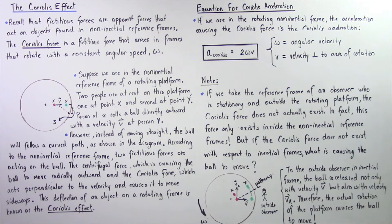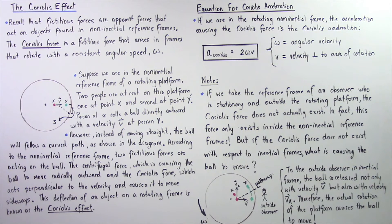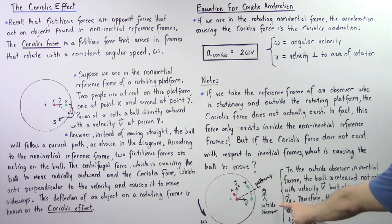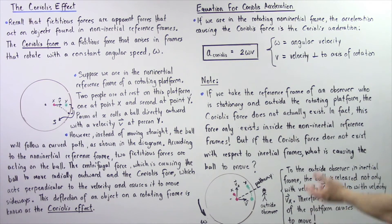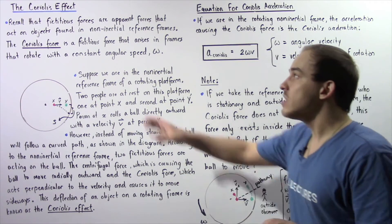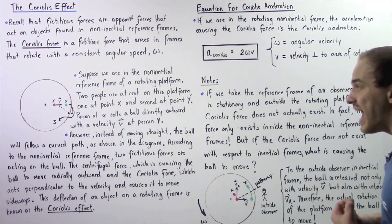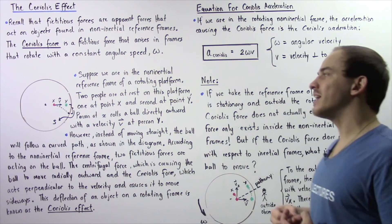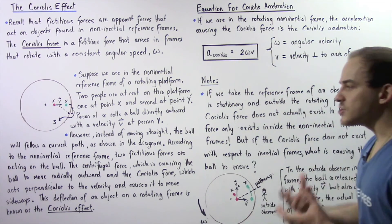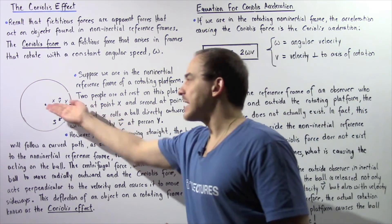So it's the rotation of this frame that causes the movement of our ball on that rotating frame. To the outside observer in the inertial reference frame, the ball is released not only with velocity V but also with velocity Vx. Therefore, the actual rotation of the platform is what causes the movement of this ball — and not the Coriolis force — when we're inside inertial reference frames. But if we're inside non-inertial reference frames, it is the Coriolis force that is causing that deflection pathway.